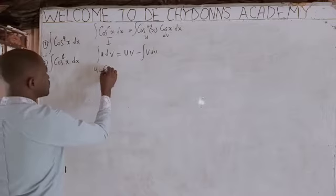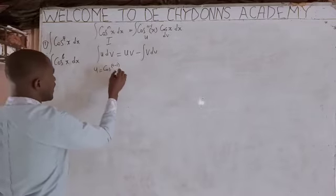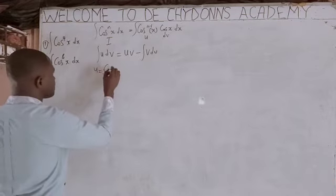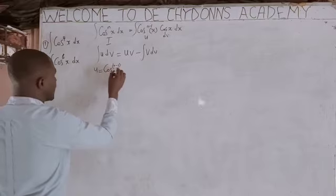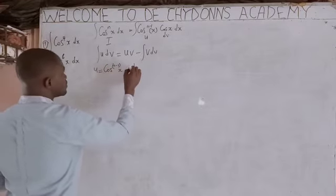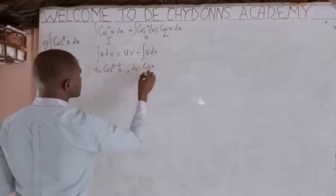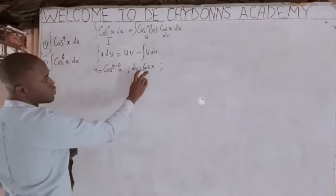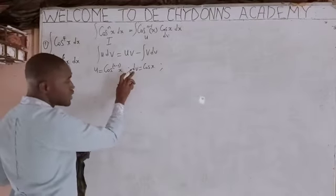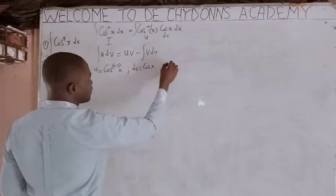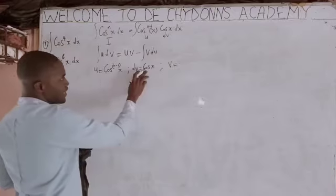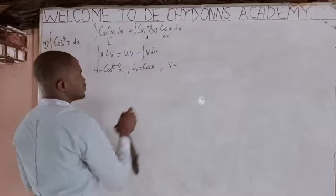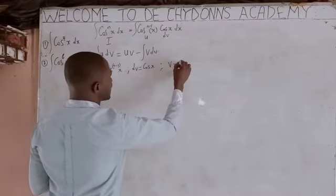What is the value of u? u equals cos raised to the power of n minus 1, x. Then dv equals cos(x) dx. When you integrate dv to get v, the opposite of differentiation is integration. So when you integrate cos(x), you get v equal to sin(x).